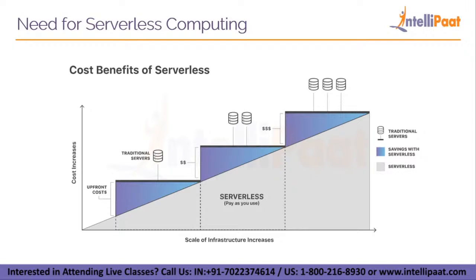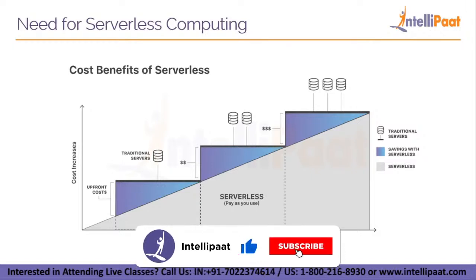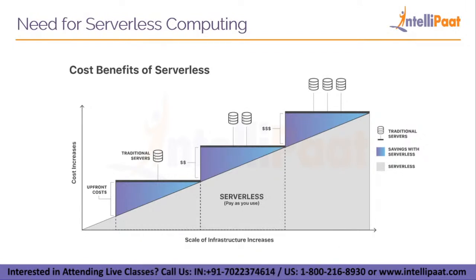On the y-axis we have cost, and on the x-axis we have infrastructure — the scale of infrastructure. The diagonal line passing through the graph basically means that as the scale of infrastructure increases — that is, as you buy more traditional servers — your cost increases. The rectangles represent purchasing of servers; each rectangle represents purchasing a new server. You start out with one server represented by a small rectangle, then two servers is a medium-sized rectangle, and three is the largest rectangle.